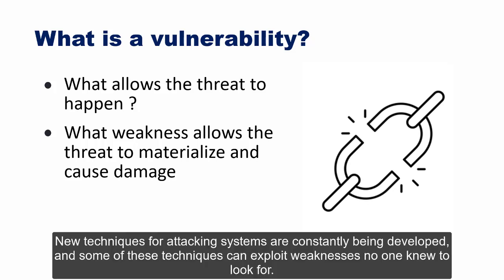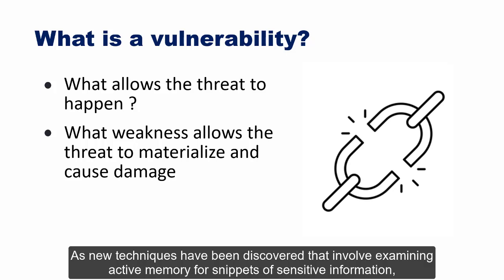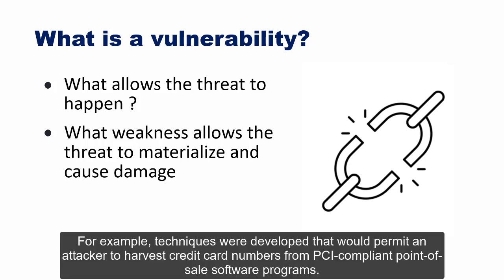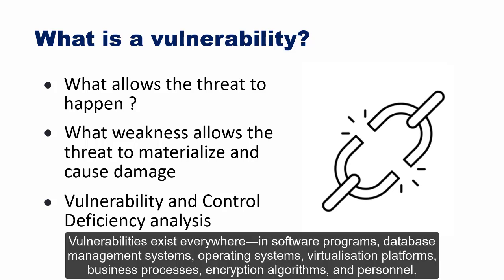Security managers should also consider undiscovered weaknesses — all information systems have vulnerabilities yet to be discovered. New techniques for attacking systems are constantly being developed, some exploiting weaknesses no one knew to look for. For example, techniques were developed to harvest credit card numbers from PCI-compliant point-of-sale software, enabling cybercriminals to steal tens of millions of card numbers from global retailers. Vulnerabilities exist in software programs, database management systems, operating systems, virtualization platforms, business processes, encryption algorithms, and personnel.